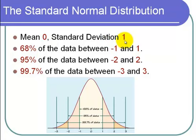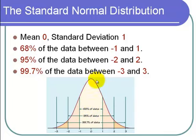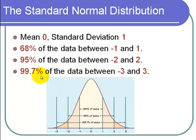If you remember the empirical rule, if the distribution is normal, then 68% of the data should fall between negative 1 and 1. Since we're talking about a curve and a distribution, we say the area under the curve of the standard normal distribution between negative 1 and 1 is 0.68. The area under the curve for z between negative 2 and 2 is 0.95, and for z between negative 3 and 3, the area under the curve is 0.997.